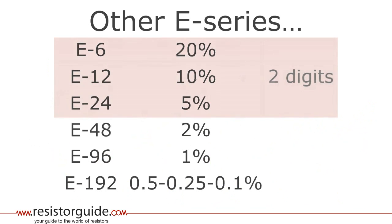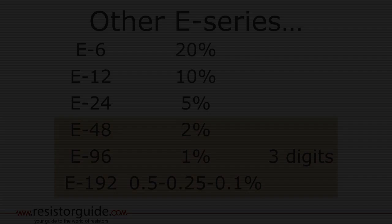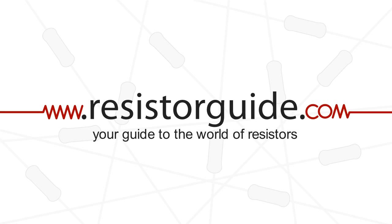Every value of the E-6 is also showing in the E-12 and E-24. And until E-24, the values have 2 digits. Above E-24, 3 digits are used and the accuracy gets higher. The values of the E-48 are also occurring in the higher series. On resistorguide.com you find the complete tables for preferred values and more information on resistor codes and standards.